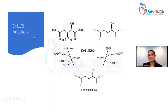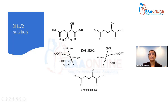This is a slide showing the IDH1 and IDH2 mutations. IDH stands for isocitrate dehydrogenase. When you have the mutation, instead of producing alpha-ketoglutarate, you're producing 2-hydroxyglutarate. And that is what causes the problems with AML when you have this mutation.